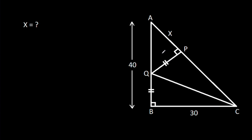In this video, we have been given that angle ABC is 90 degrees, angle APQ is 90 degrees, and BQ is equal to QP. AB is 40, BC is 30, and AP is X. Then we have to find X.